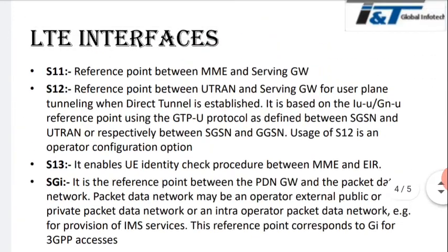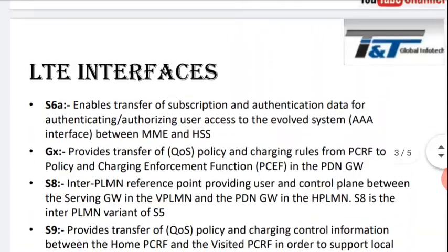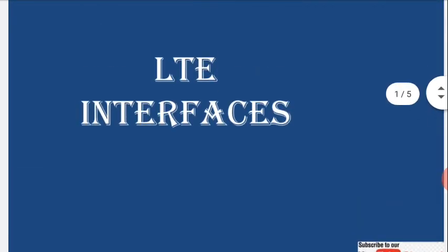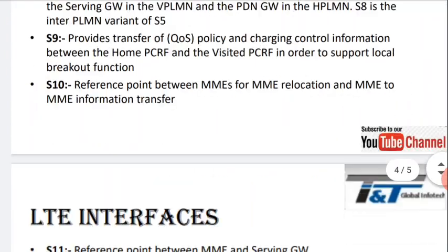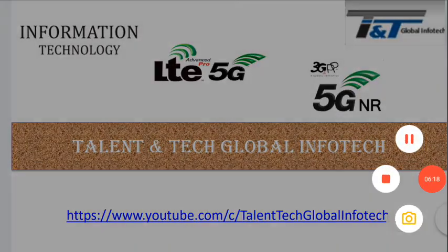So I have given you details about the LTE interfaces. Before going to study LTE interfaces, you have to remember the LTE architecture — from where to where it is connected, where is the MME, where is the HSS, what is each network element, what is eNodeB, what is E-UTRAN. If you understand the LTE architecture, then it will be easy to understand the LTE interfaces. If you like this video, please subscribe to my channel. Thank you so much.